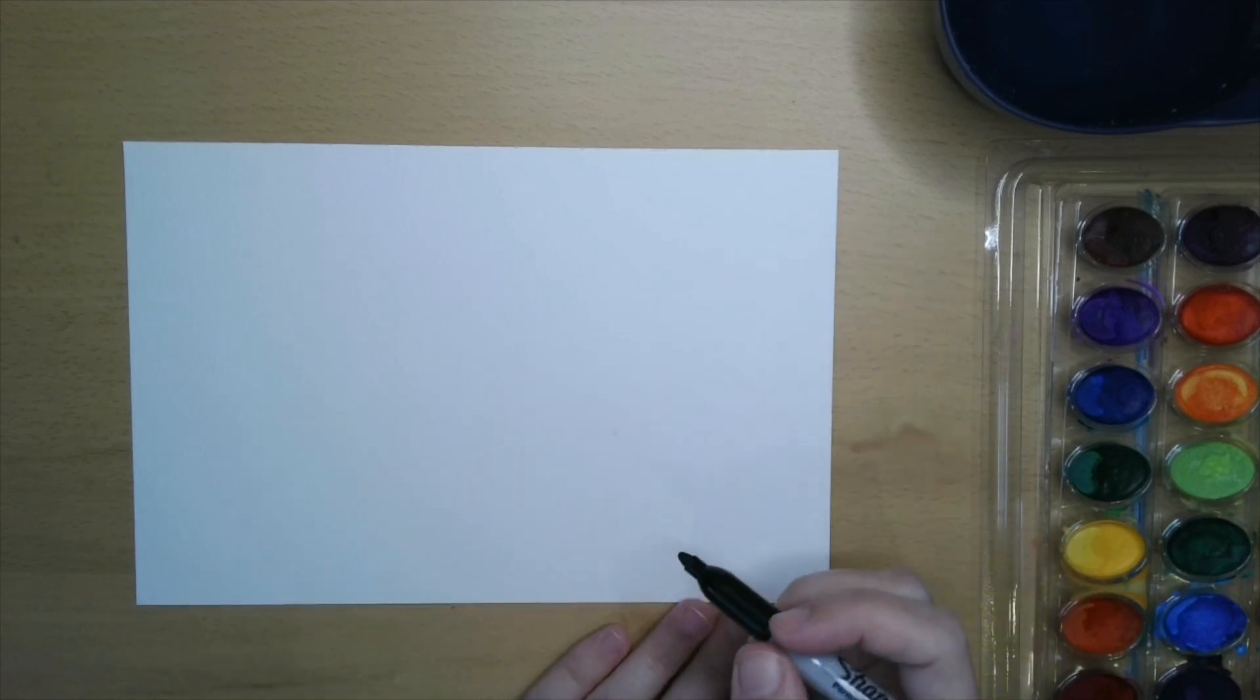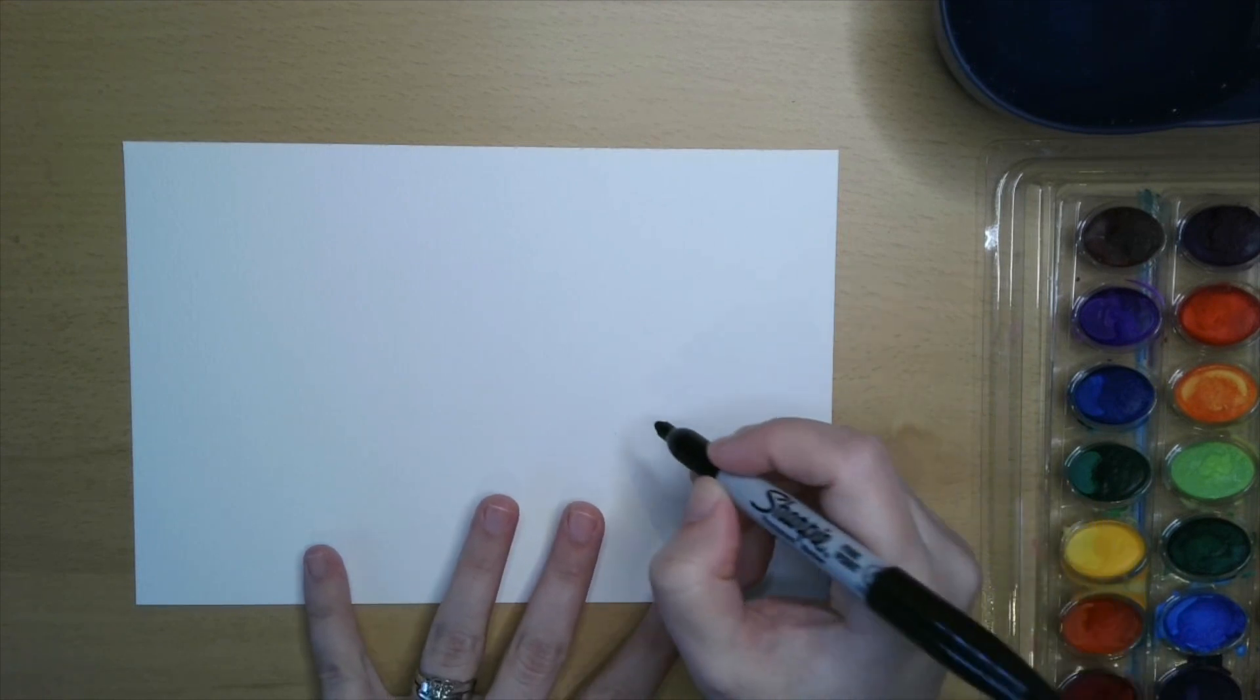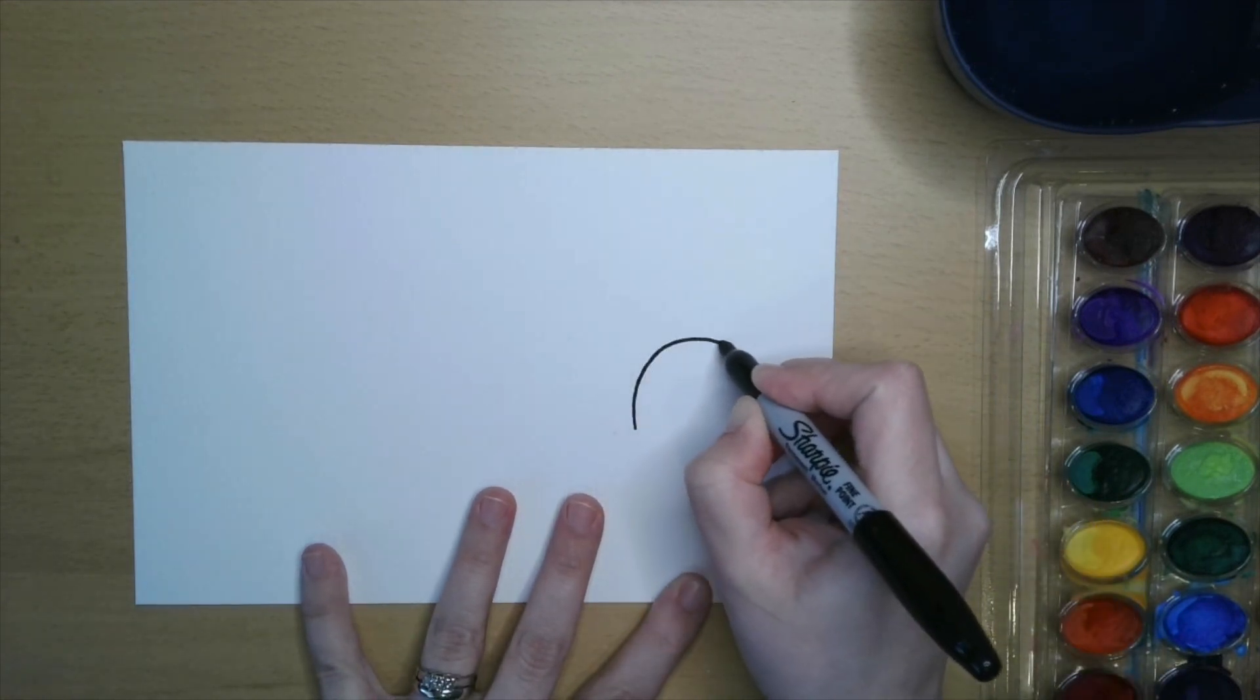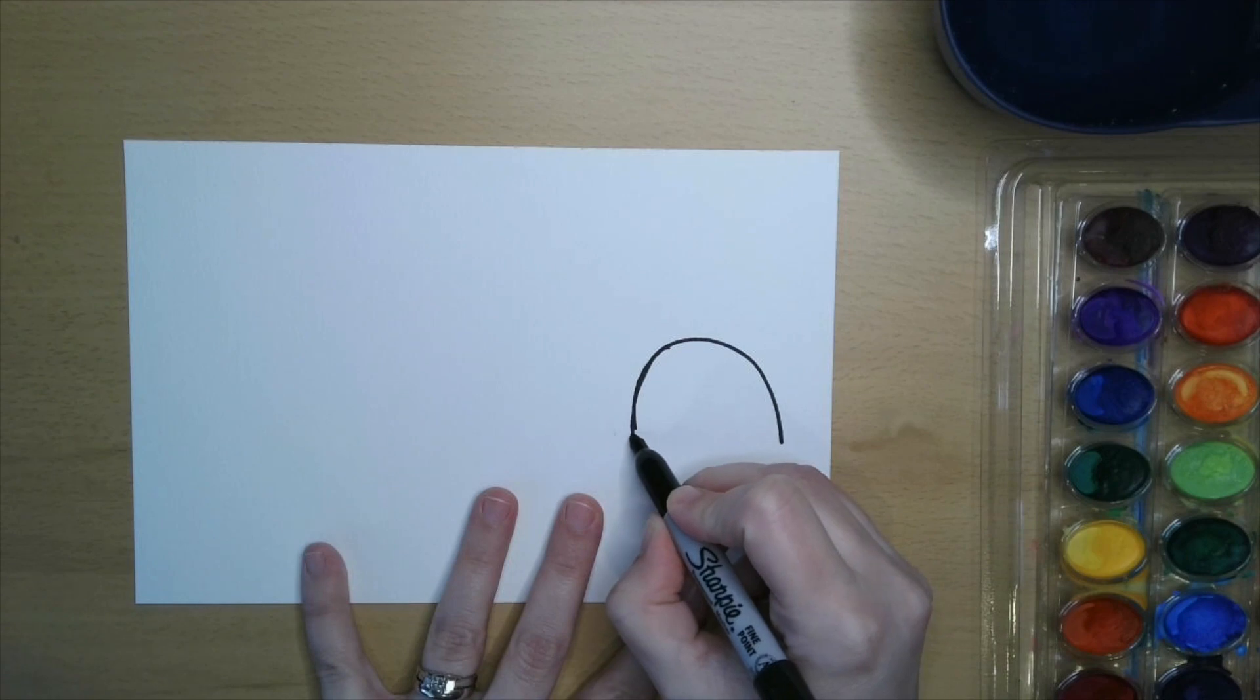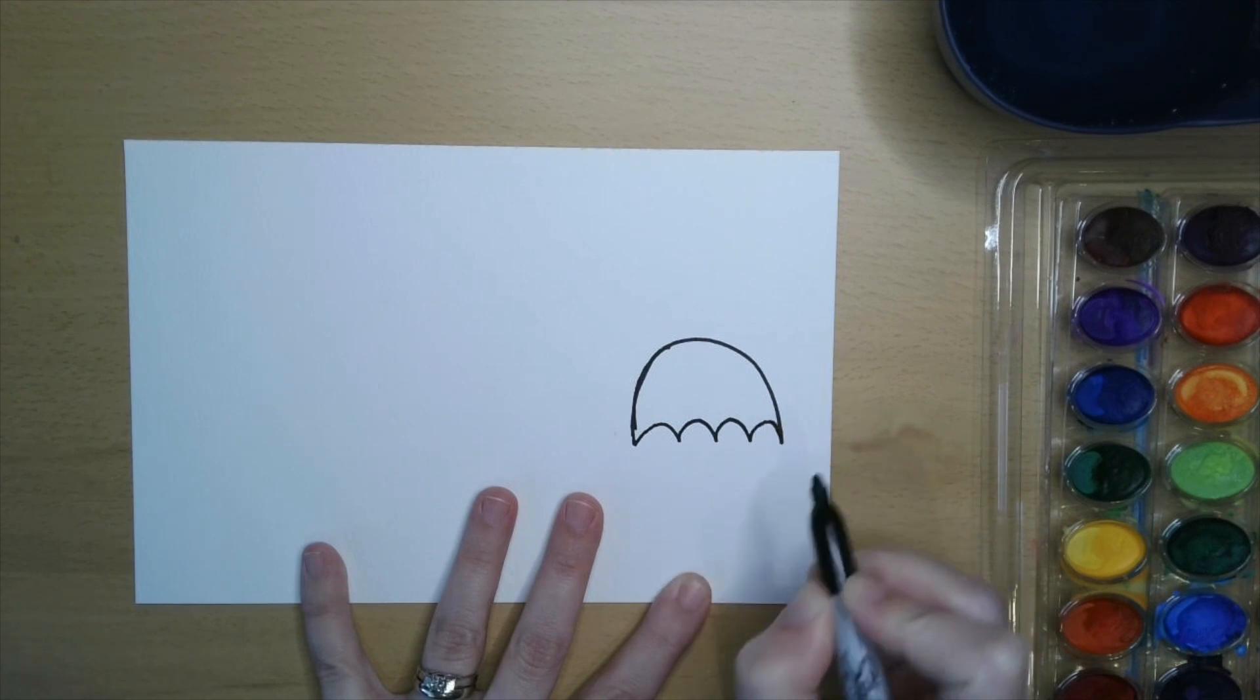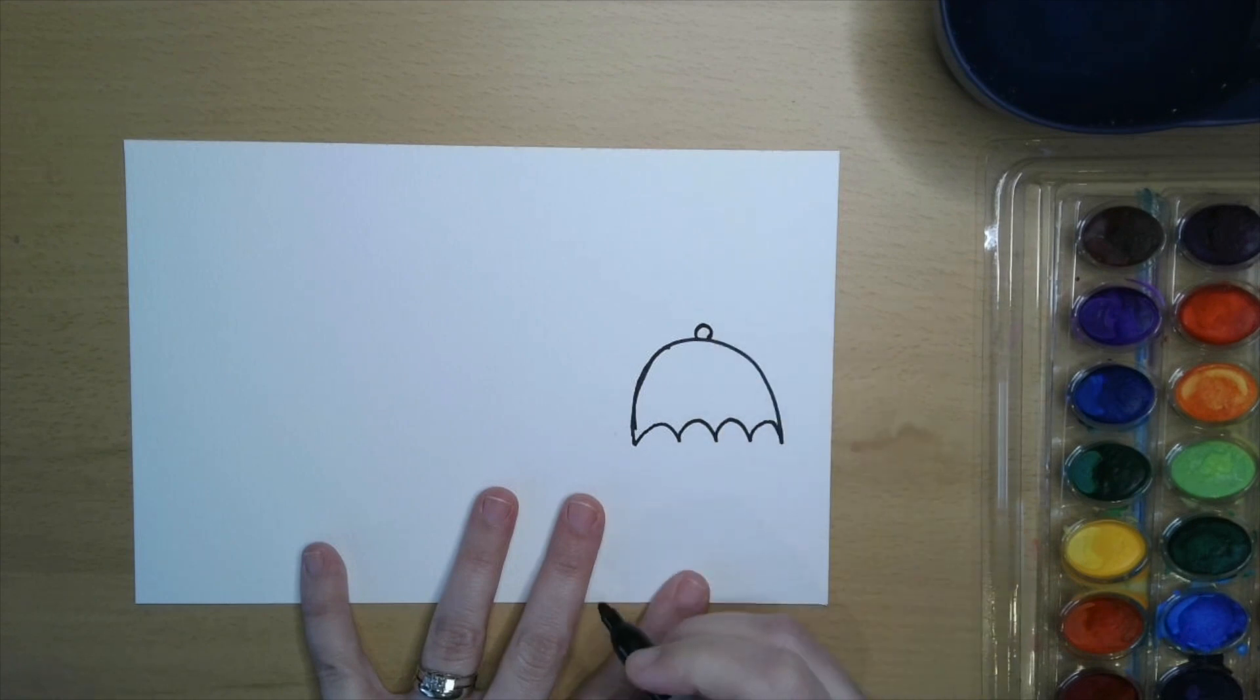First I'm gonna pick one side of my paper, my right side, and draw my umbrella first. I'm gonna take my Sharpie and draw a kind of medium rainbow shape, and then from one side to the other I'm gonna put some little M shapes, some little bumps for the bottom of my umbrella, and then on the top I'm gonna put a little circle.